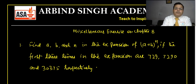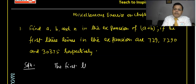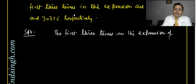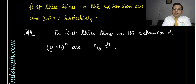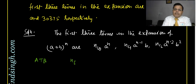Solution: the first three terms in the expansion of (A + B)^N are: NC0 · A^N, NC1 · A^(N-1) · B, and NC2 · A^(N-2) · B². According to the question, the first term NC0 · A^N is equal to 729. This is the first equation.